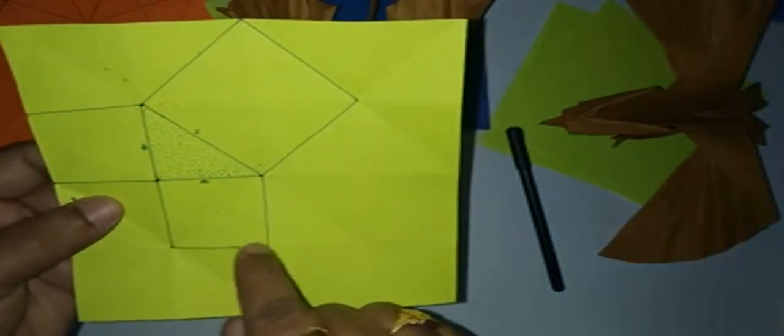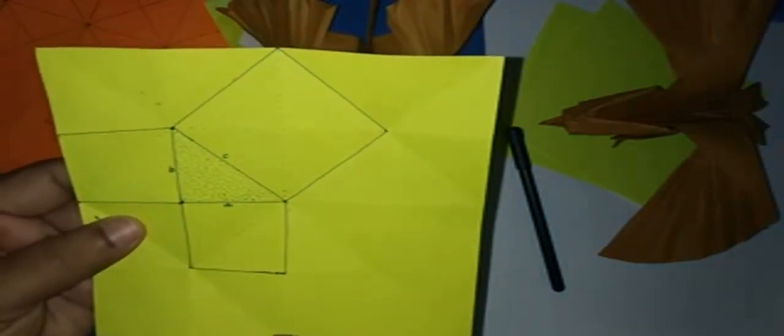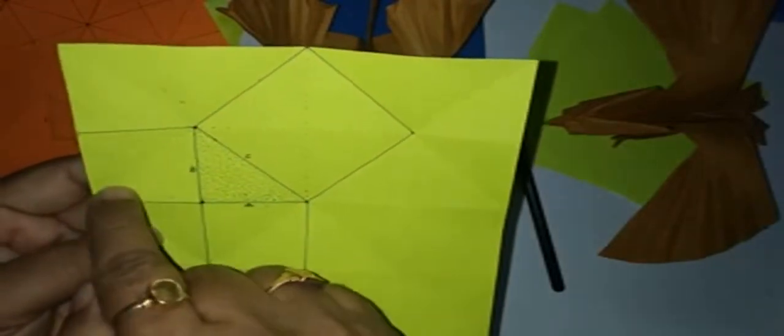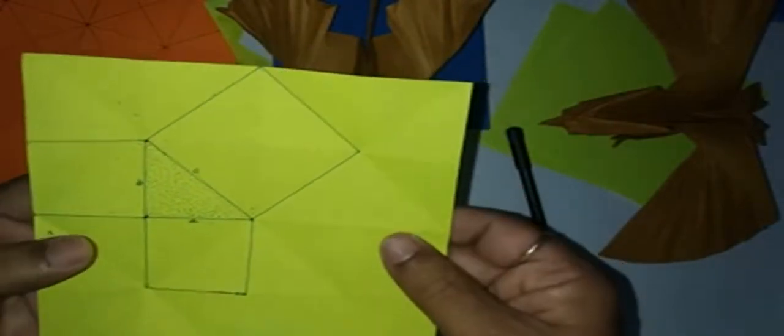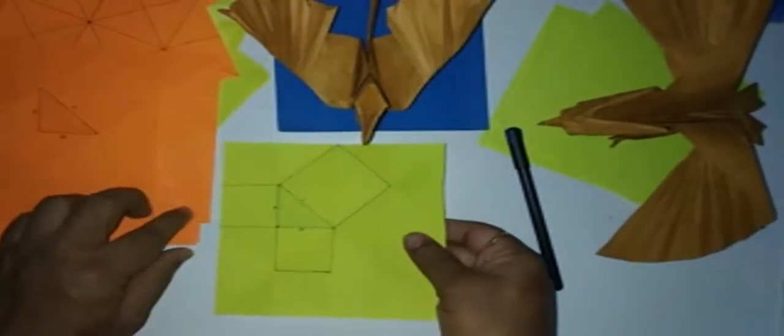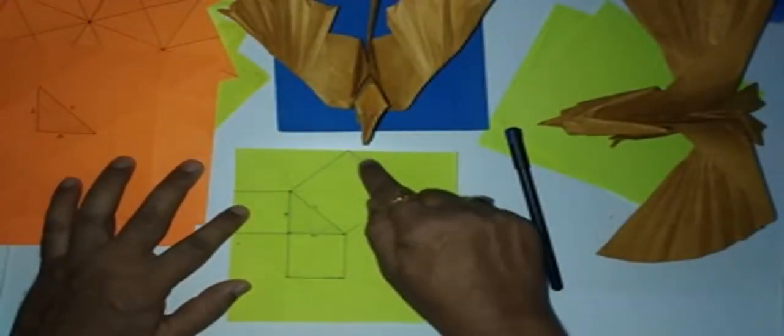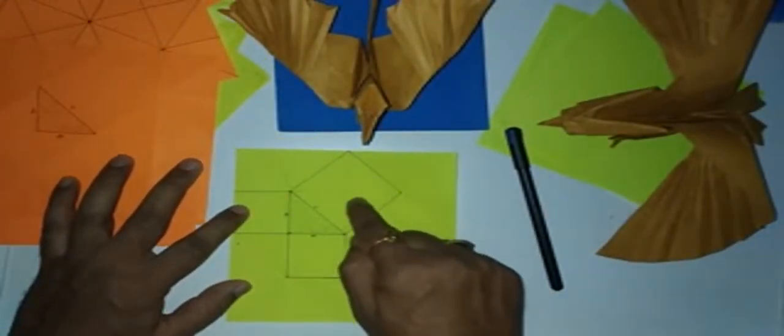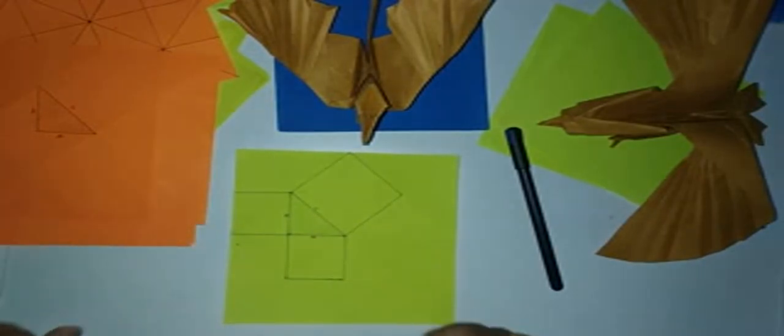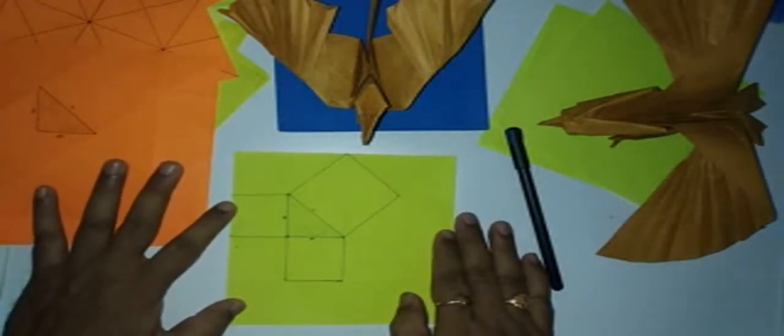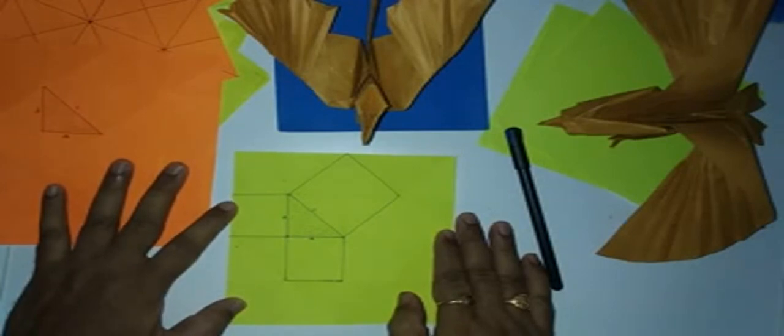The adjacent side square has two triangles. The opposite side square has two triangles. But the hypotenuse square has four triangles. All the triangles are of equal size.